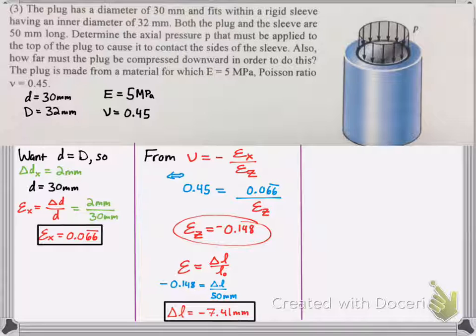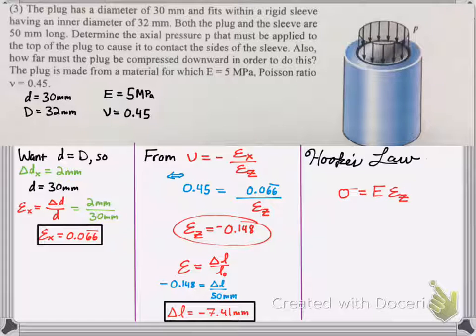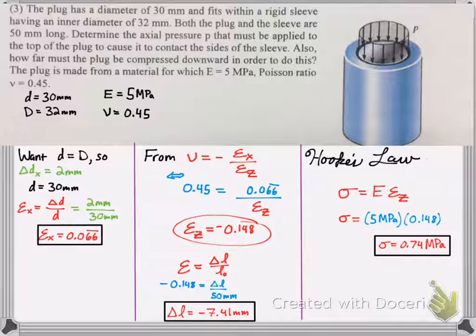Now, finally, we're trying to see how much pressure is required to do this. Well, by Hooke's law, we know stress is Young's modulus times the elasticity in the z direction. And remember, stress is force over area. Pressure is also force over area. So we can just solve for stress, which is pressure. And we were given the Young's modulus of 5 megapascals. We just calculated εz, the elasticity in the z direction. So we know the stress is 0.74 megapascals.